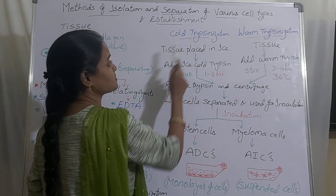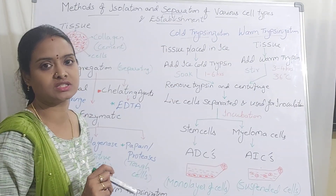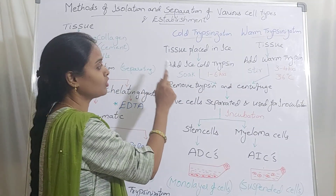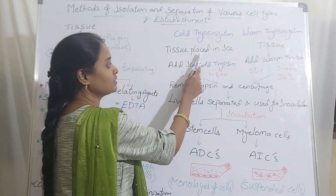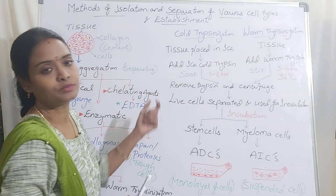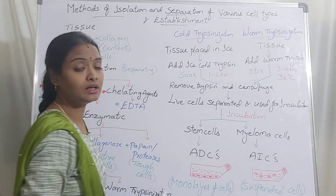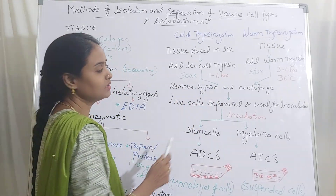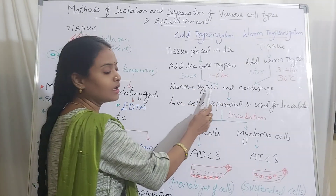In the cold trypsinization process, you first select the organ or tissue, then place it in ice. Maintain it in ice, then add ice-cold trypsin to the vial containing the tissue. Allow it to soak for 1 to 6 hours. After that, remove the trypsin and centrifuge.